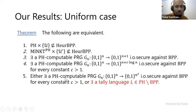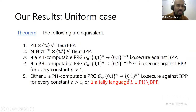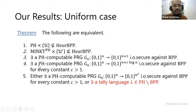This implies the existence of pH-computable PRGs with non-trivial seed length (n^epsilon or polynomial stretch). In the uniform case, we get very similar results, except the stretch of the PRG we can get from average case hardness is smaller — order log n. The interesting directions are four and three implies one, and one implies two. We also get equivalence with some other conditions where you have polynomial stretch.